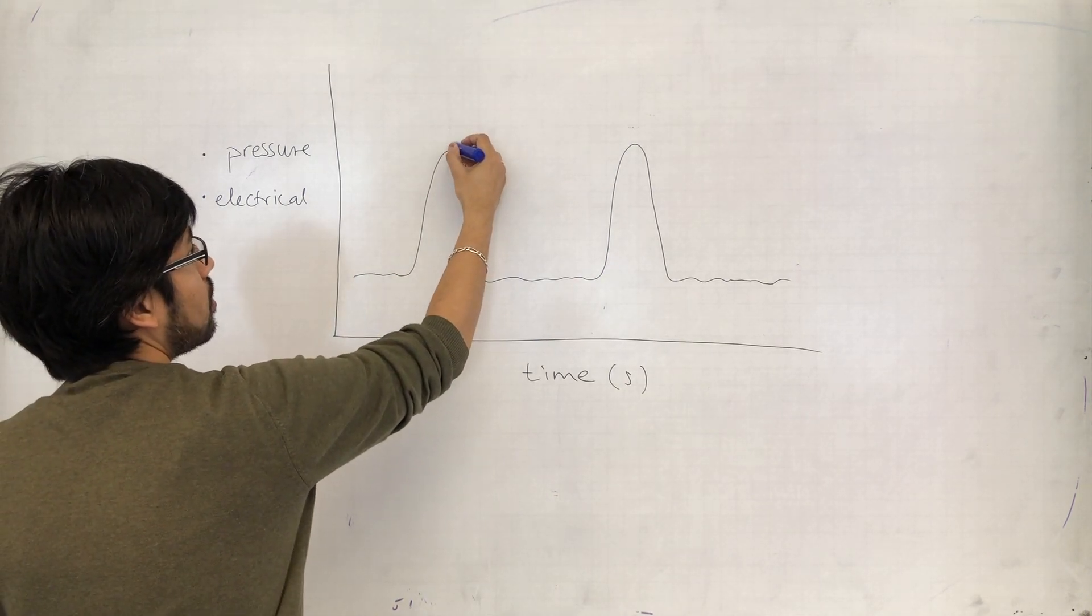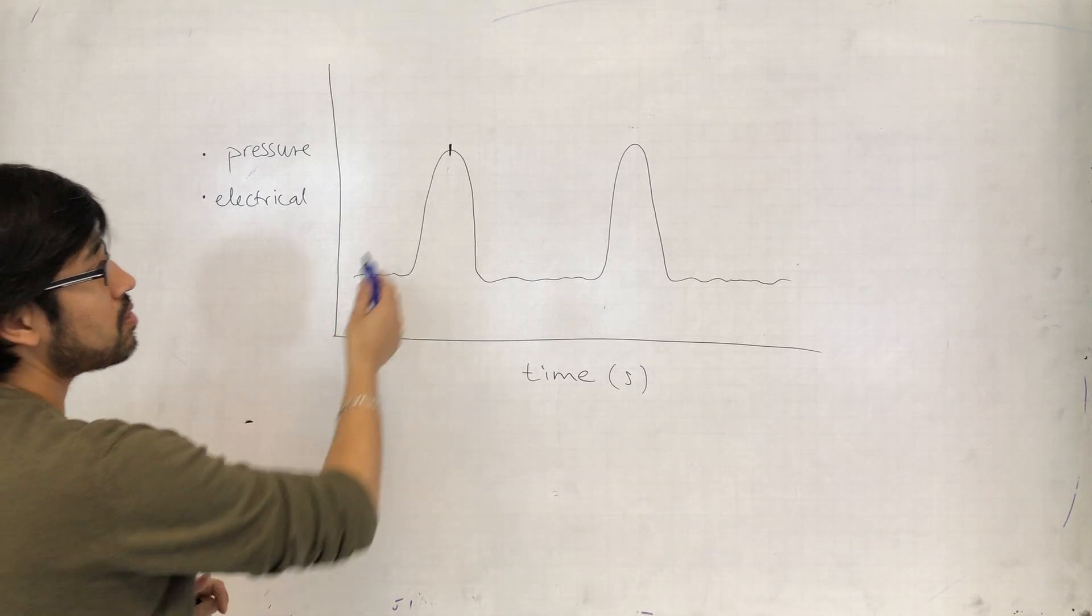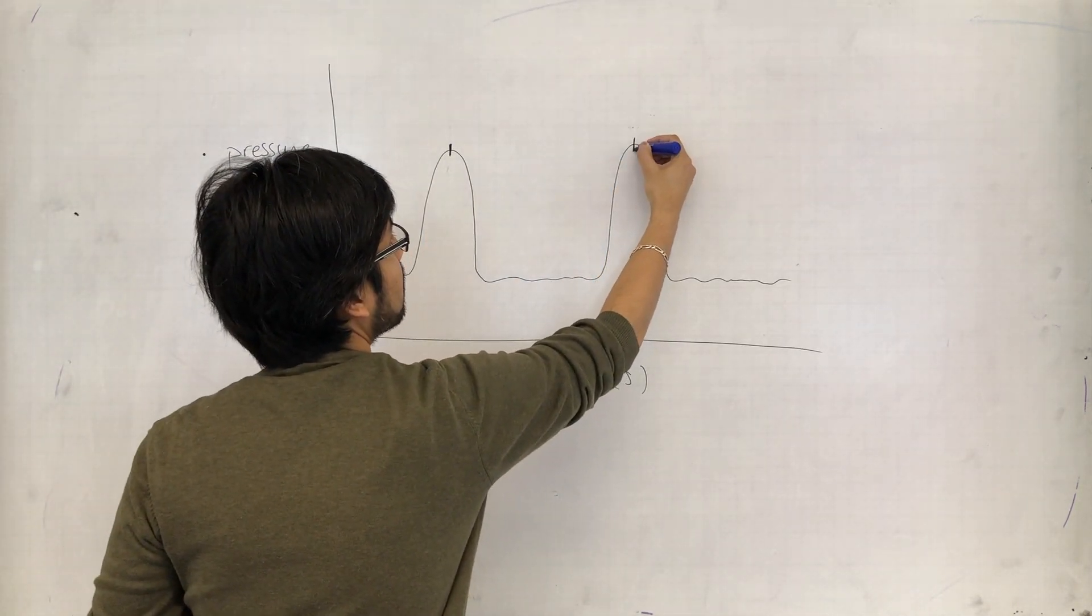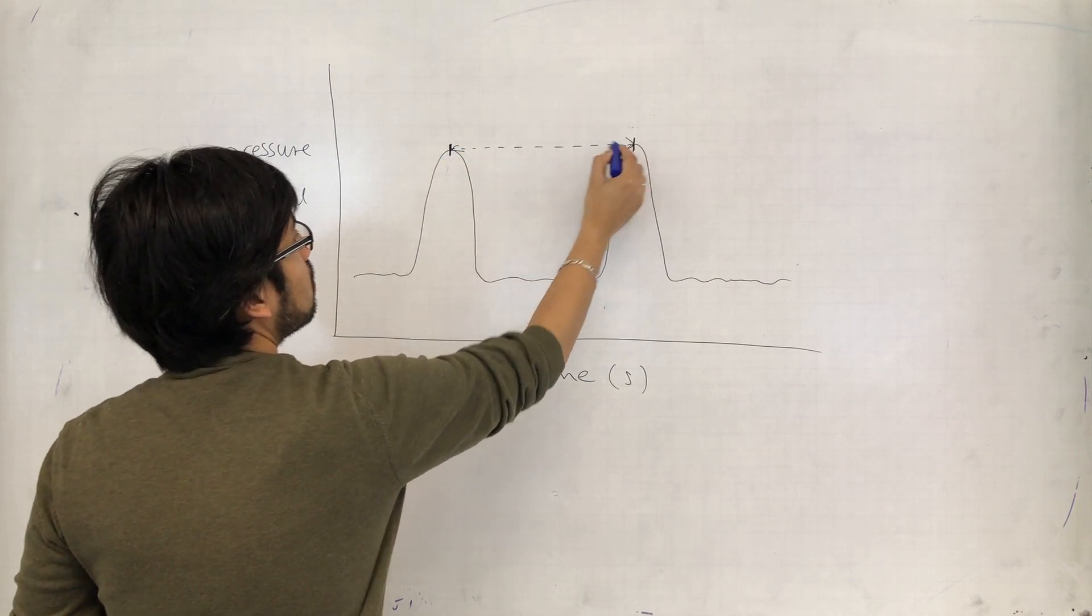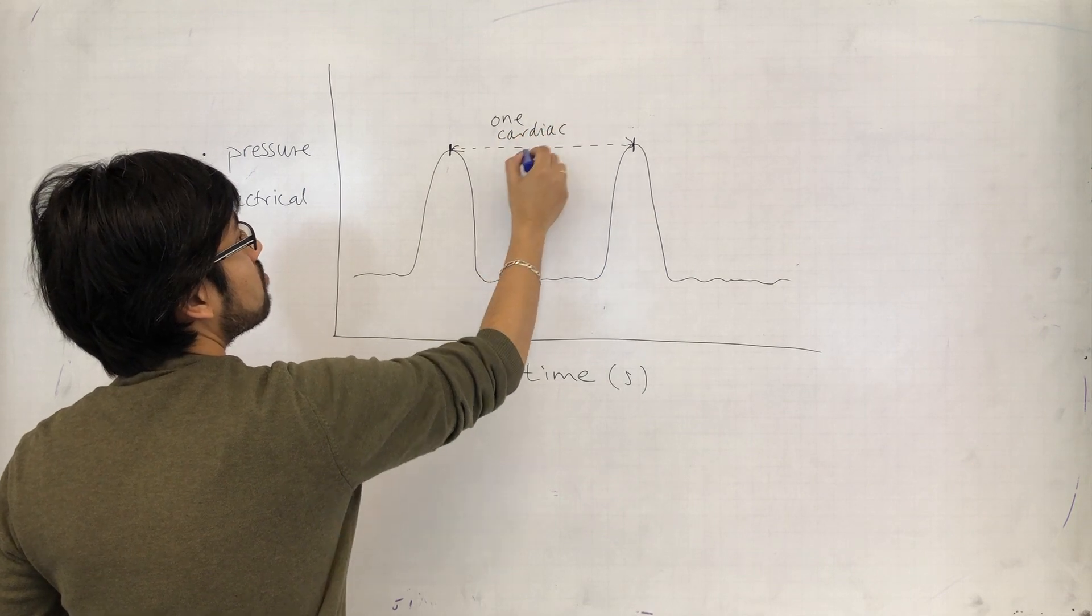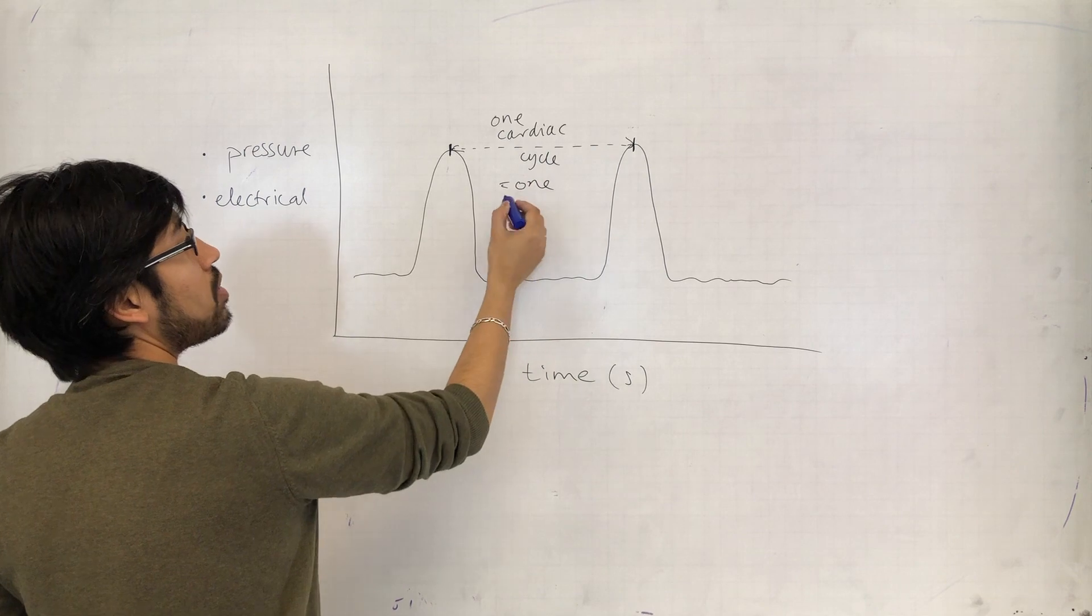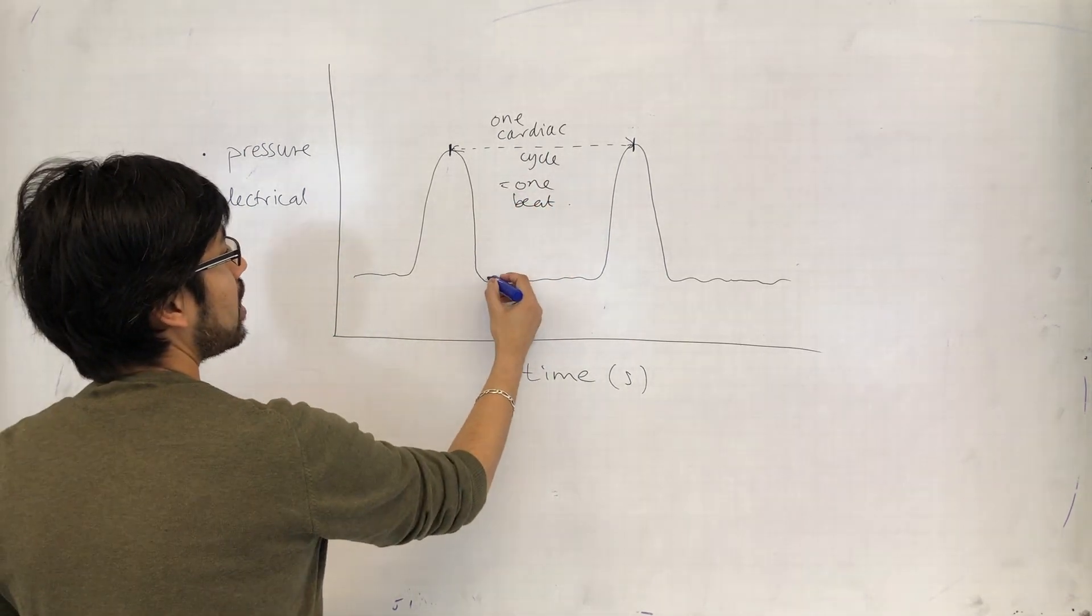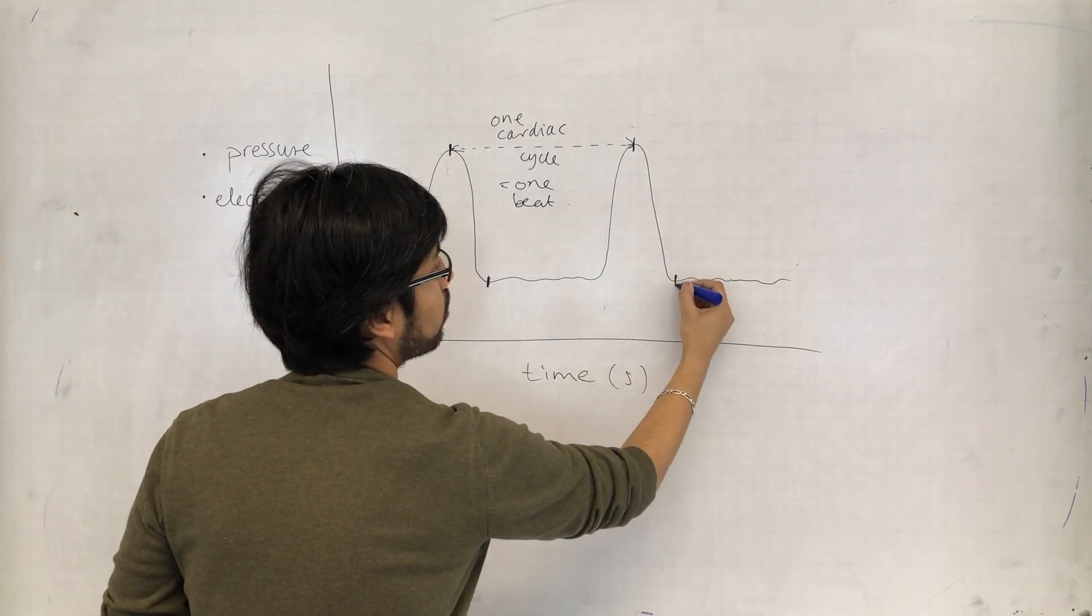If I recognize that point there in that cardiac cycle, the time it takes to get to the same point in the next cardiac cycle - that time is the time it takes for one cardiac cycle, which is equivalent to one heartbeat. So as long as I find two points...